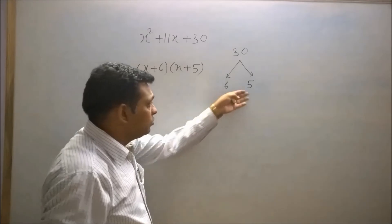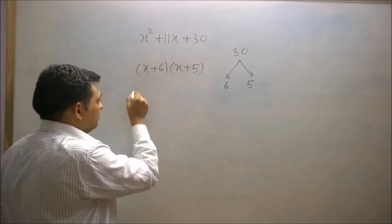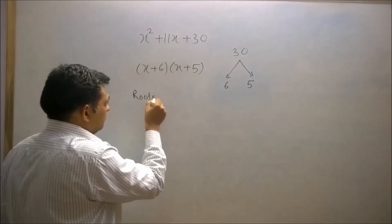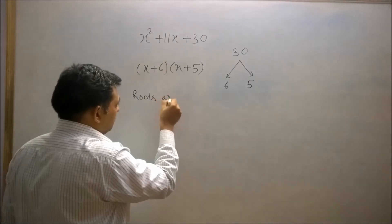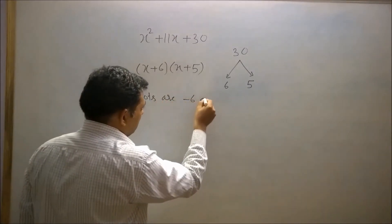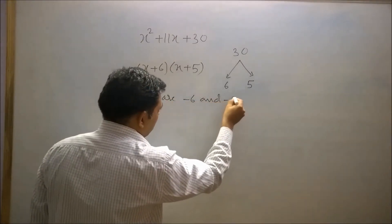If we want to find the roots of this polynomial, we have to reverse the sign of these two numbers. So the roots are x = −6 and x = −5.